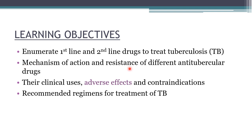You need to know the mechanism of action and resistance of different anti-tubercular drugs. The mechanism of action of all first-line drugs is really important, and the resistance of isoniazid is more important than the rest. The clinical uses of rifampin are really important as it has many uses beyond tuberculosis. Adverse effects of all anti-tuberculous drugs and recommended regimens for treatment are also frequently asked in exams.